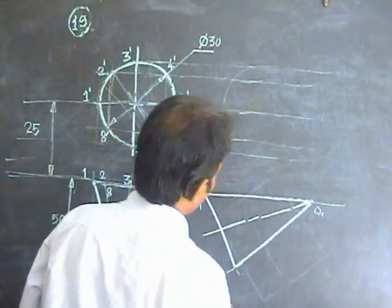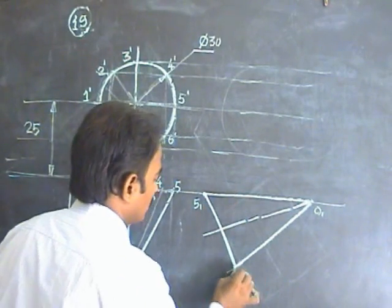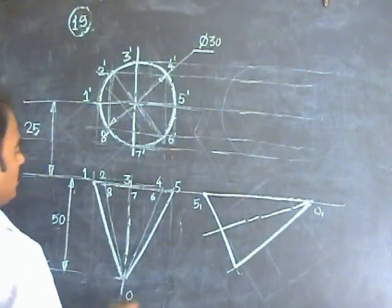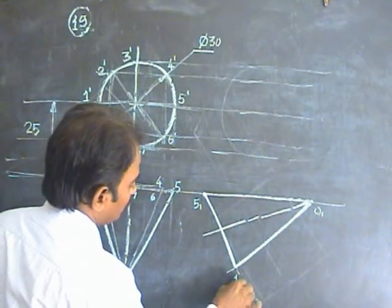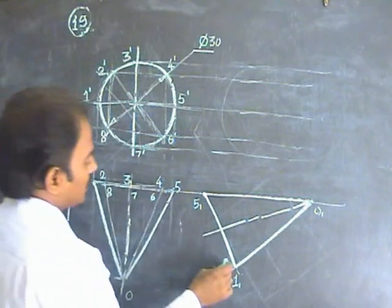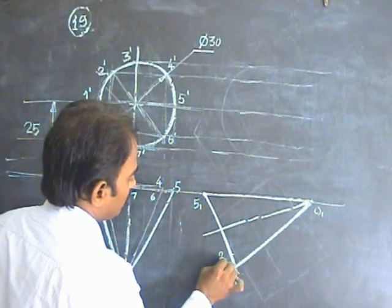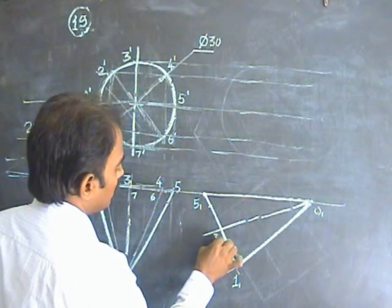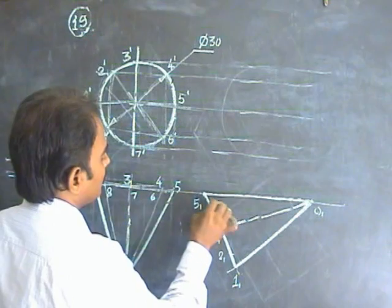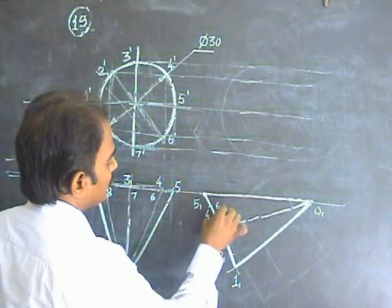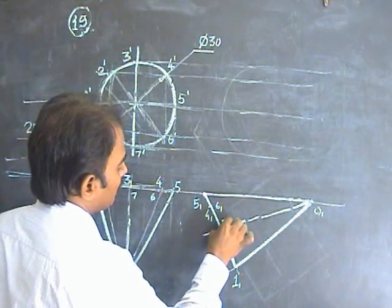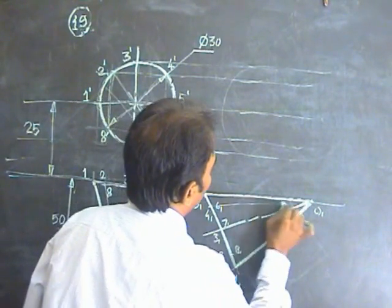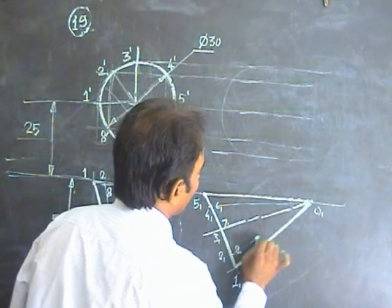Now copy the new points on the position. So this slant is 1 suffix 1. Try to copy these generators. You have 2 suffix 1, another one is 3 suffix 1, then 4 suffix 1, 5 suffix 1 is there, then you can have 6 suffix 1, 7 suffix 1 and 8 suffix 1. Join the other generators by inline only.